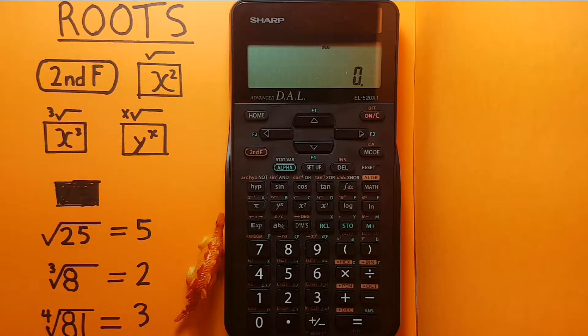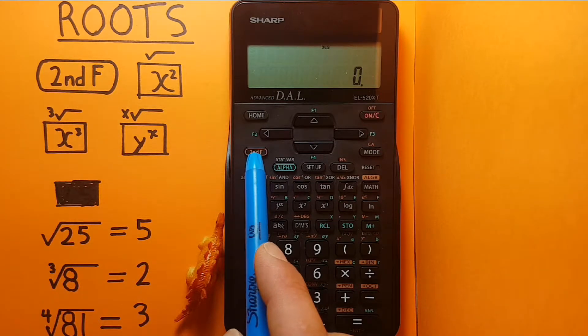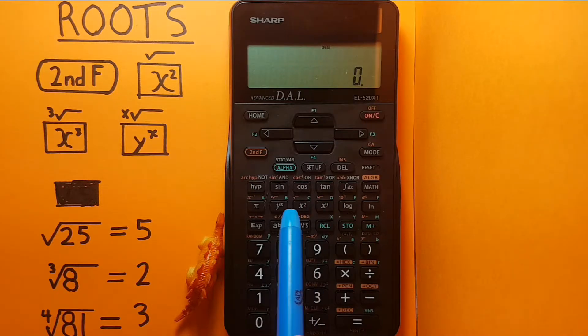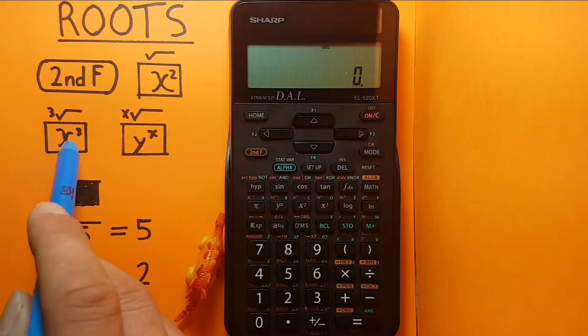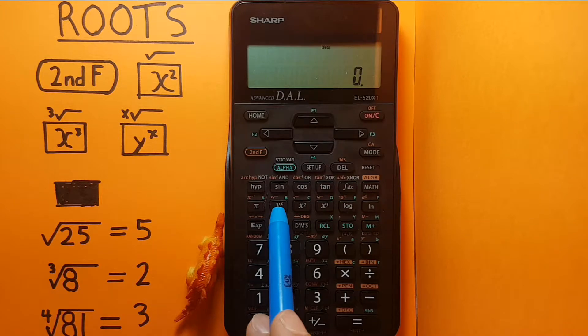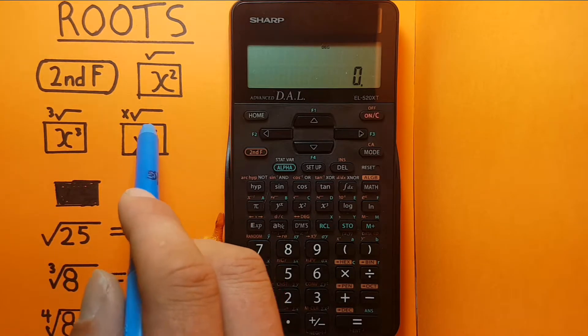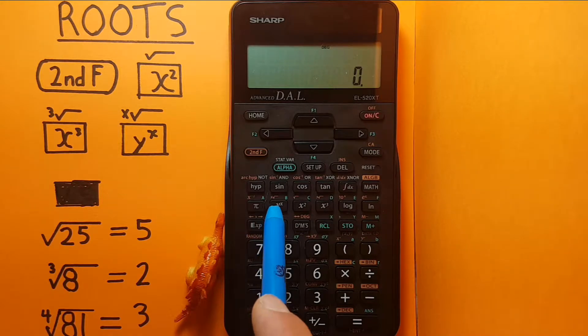To do this we'll be using the second function key, the x squared with the root second function, the x cubed with the cube root second function, and the y to the x with the x root second function.